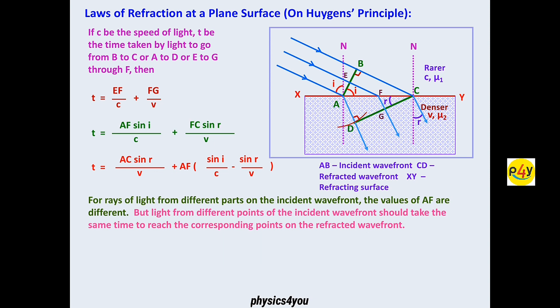The total time period T equals AC sin R by V plus AF sin I by C minus sin R by V. For rays of light from different parts of the incident wavefront, the value of AF is different, but from different points of the incident wavefront should take same time to reach corresponding points on the refracted wavefront. So T should not depend upon AF. This is possible only if sin I by C minus sin R by V equals zero. Or sin I by C equals sin R by V, or sin I by sin R equals C by V, that is mu, the refractive index.